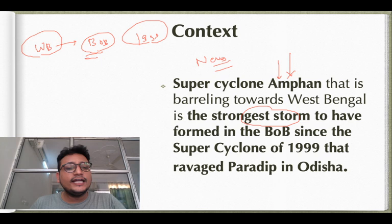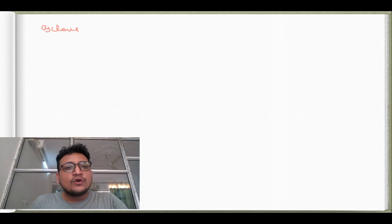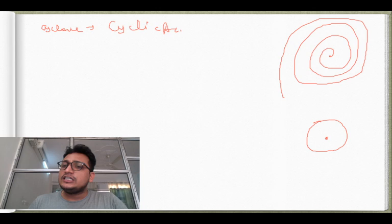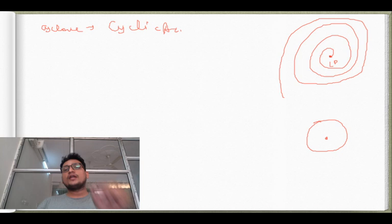Now we need to understand what cyclones are. A cyclone is something related to cyclic activity. If we see the top view of a cyclone, it will show cyclic activity. A cyclone is called a low pressure center, and around this low pressure center there is a cyclic rotation of winds — this cyclic activity is the cyclone.